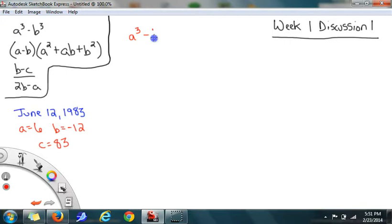I'll start with the first expression, A to the third minus B to the third. In this one, my variables are A and B. I'm going to substitute in the integers to replace A and B, the ones that I have chosen. So I'm going to substitute 6 in for A and negative 12 in for B. So I will rewrite this as 6 to the third minus negative 12 to the third.